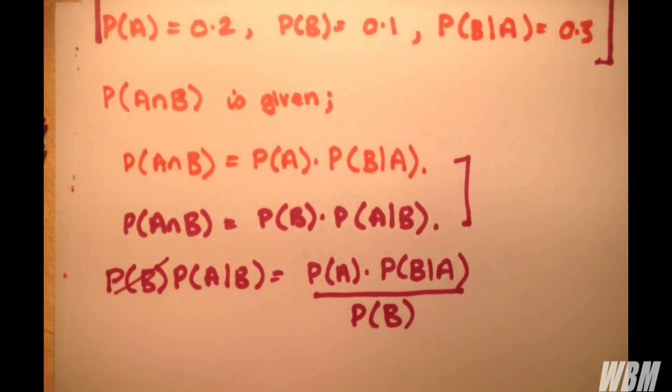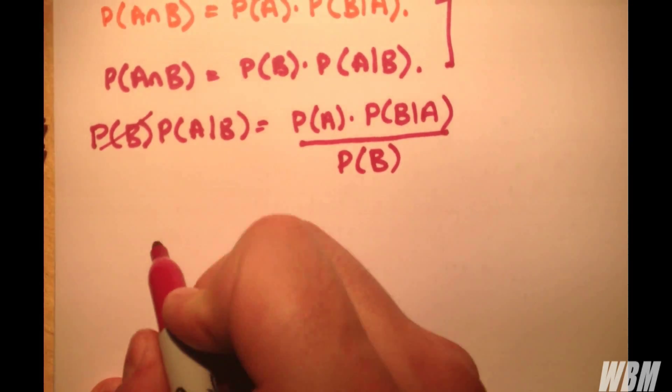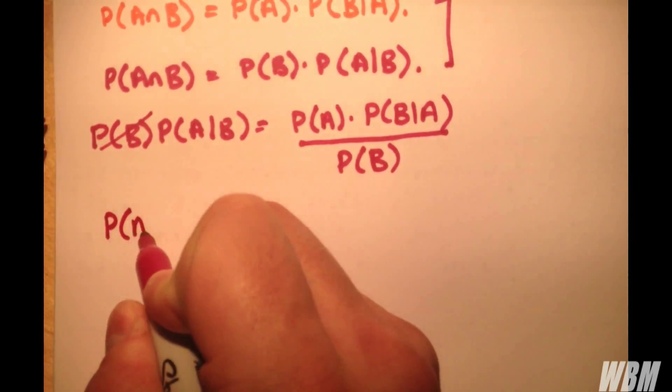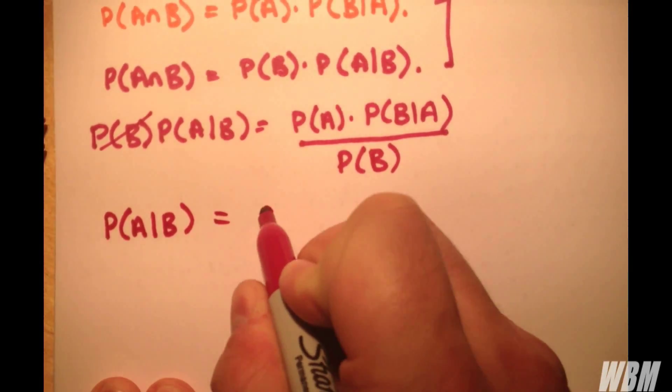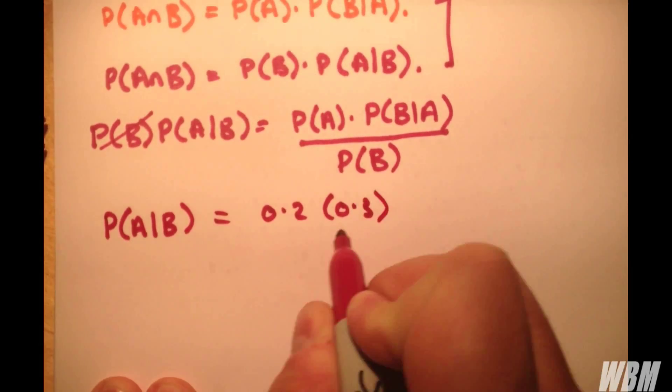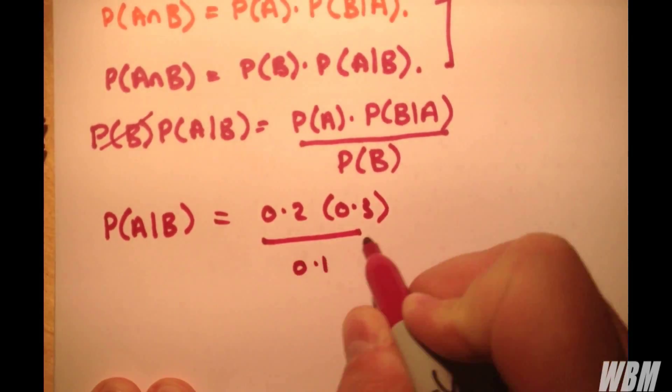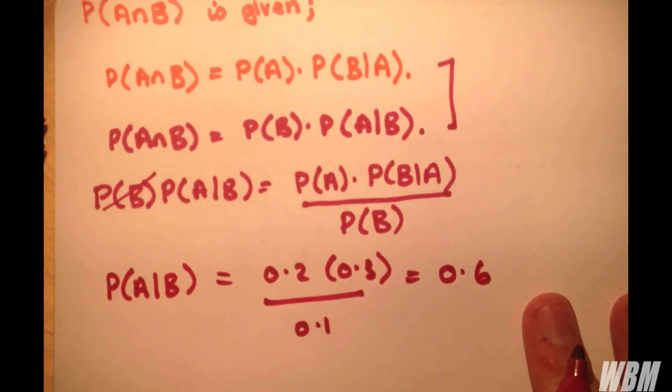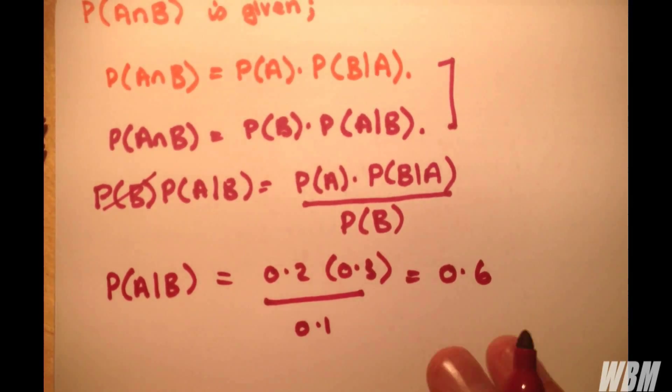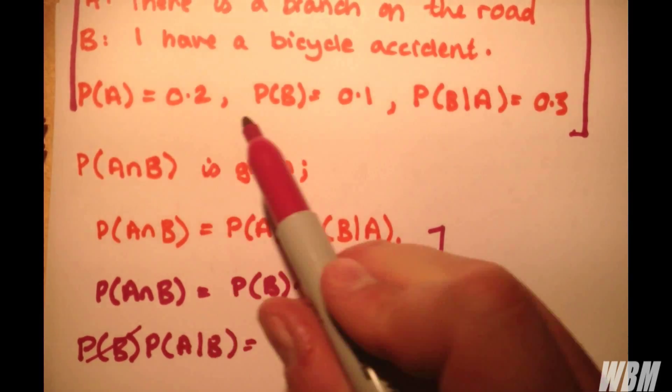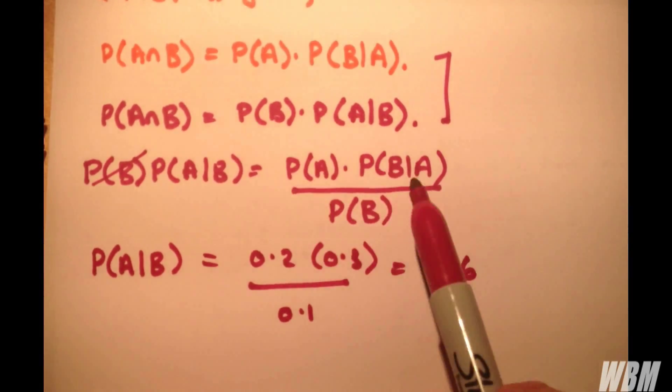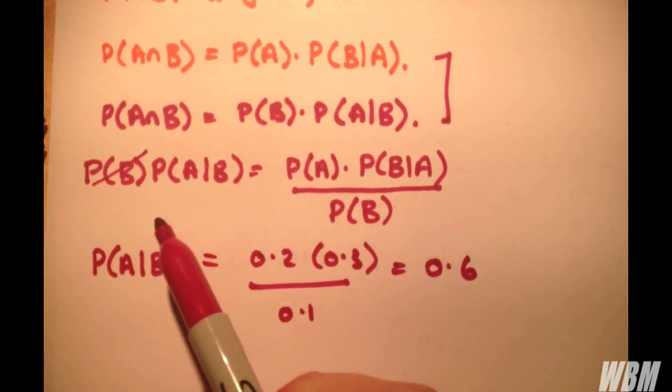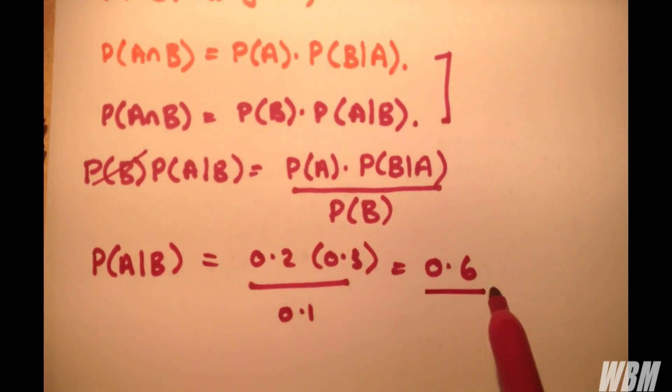So quickly putting in some values from the question, we substitute in. Substitute 0.2, 0.3, and 0.1. And by this theorem here, we're actually able to find probability of A given B, which as you can see is really quite handy and useful.